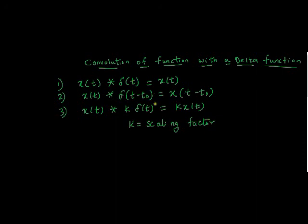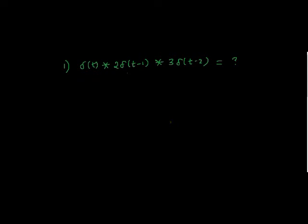These are the three properties we encounter while solving problems involving convolution of a function with a delta function. We will now see one example which makes use of all these properties. Consider this example: what is the value of δ(t) convolved with 2·δ(t−1), convolved with 3·δ(t−2)? Using the associative property of convolution, we first calculate δ(t) * 2·δ(t−1).